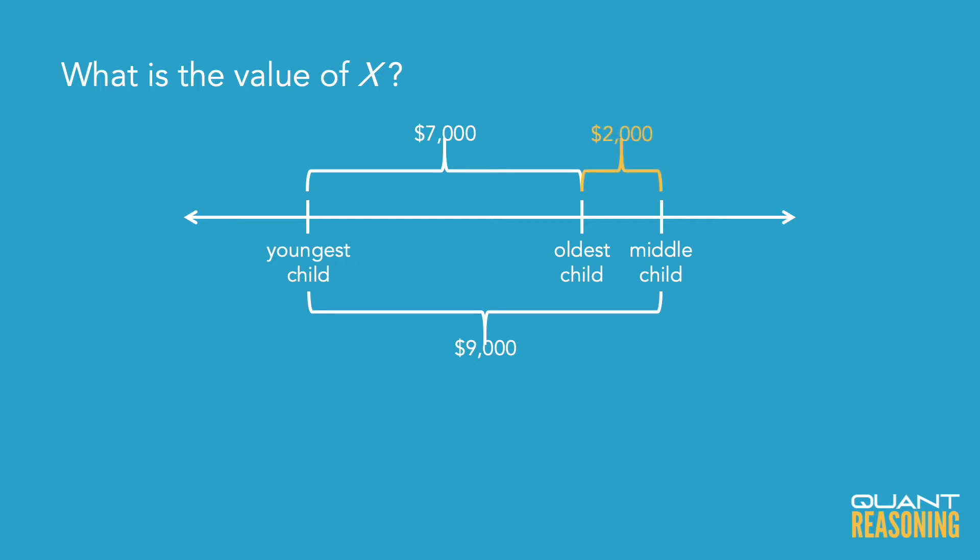So now I have all three of them visualized on a number line, and the question itself is asking what was the total amount of money that they inherited. That's going to depend on where we are on the number line.